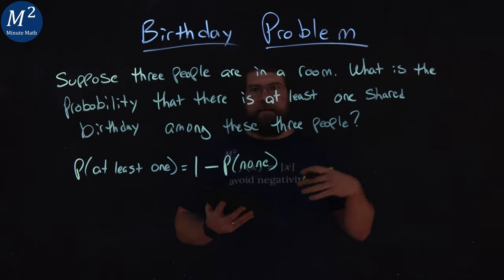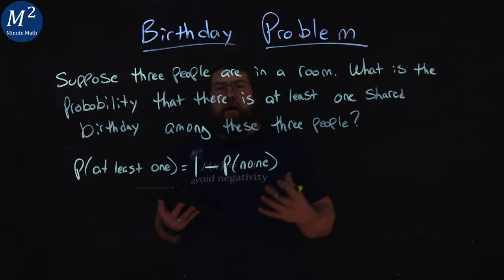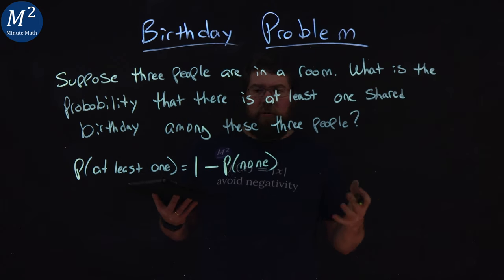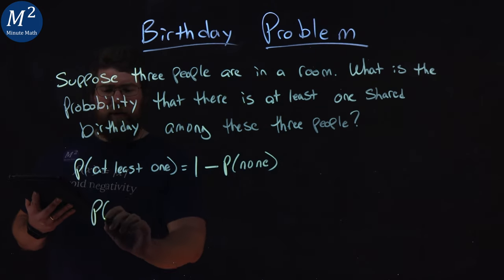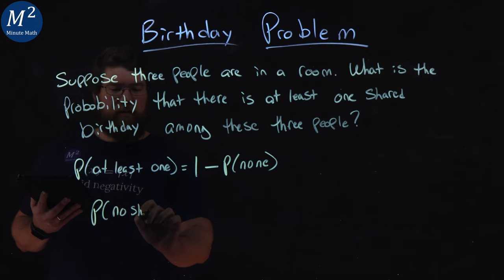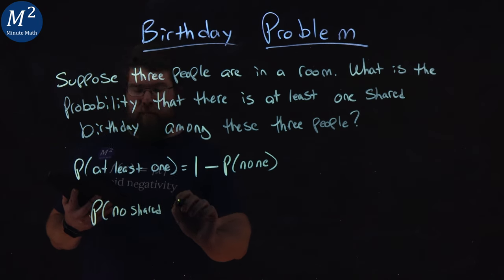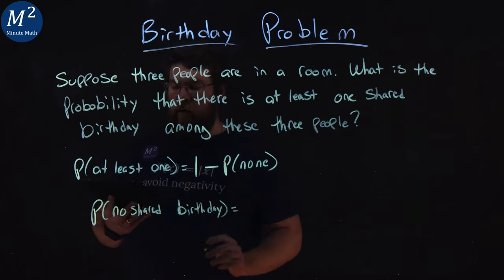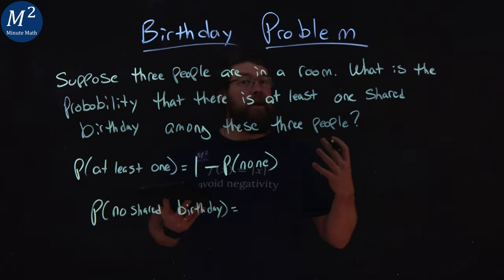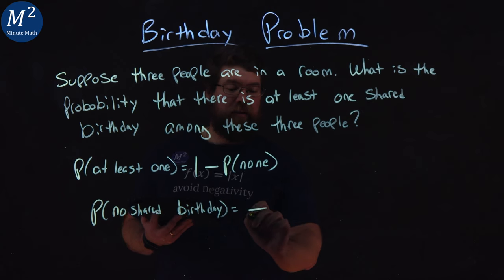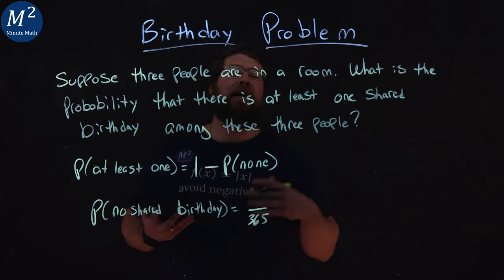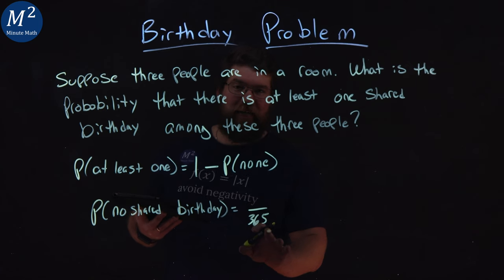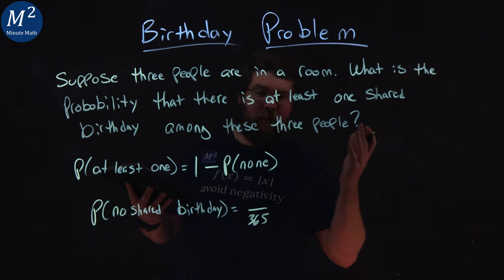So now we want to think about how we can find the probability that there are no shared birthdays for three people in a room. So the probability of no shared birthdays: well, there are 365 days in a year, 365 total. This year was a leap year, but we're going to keep it as 365, at least for the year you watch or I've recorded this video.